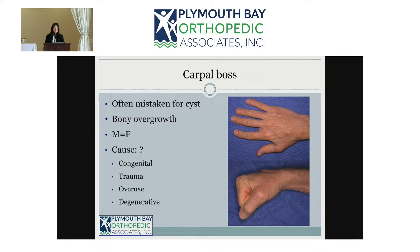Carpal bossing is something you can also see on the dorsal aspect of the wrist, and it is often mistaken for ganglion cysts. The difference is that a ganglion cyst is soft and more mobile, whereas the carpal boss feels more firm because it's a bony prominence.